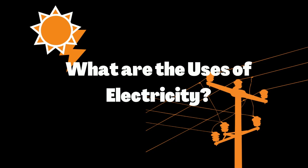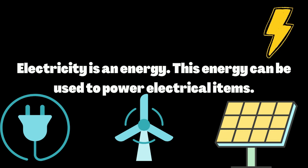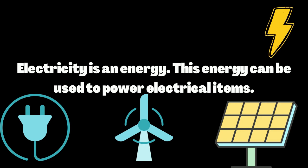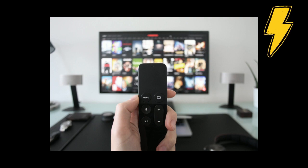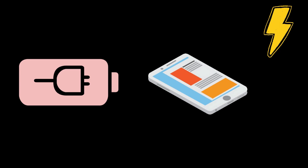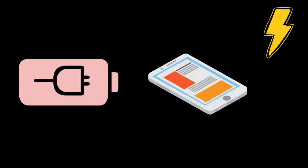Now let's talk about the uses of electricity. Look at the things around you — what are the things that need electricity? Electricity is an energy, and this energy can be used to power electrical items such as your television and your cell phone. In order to charge your phone, you need electricity.